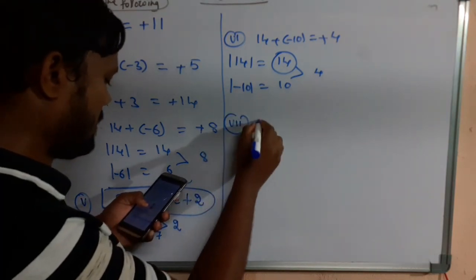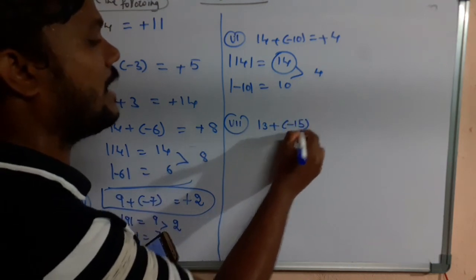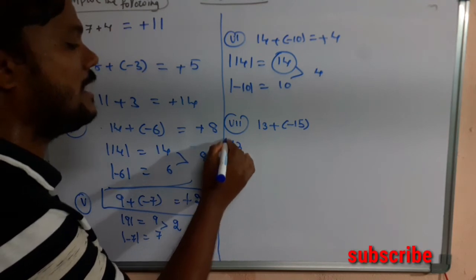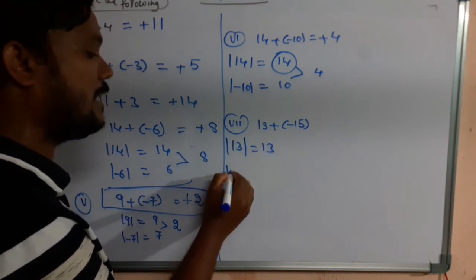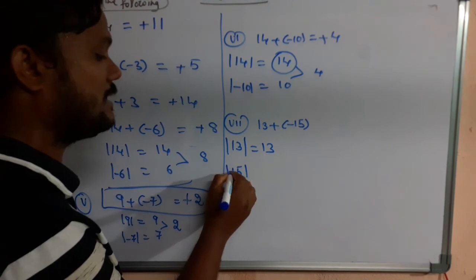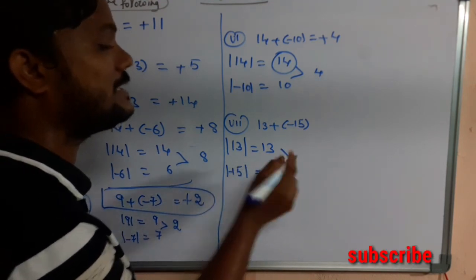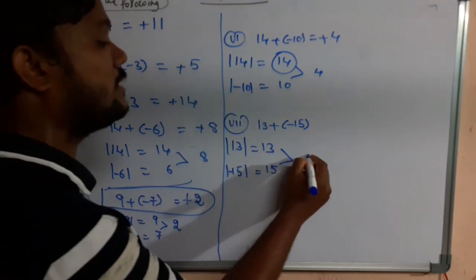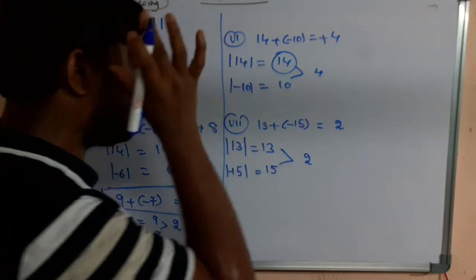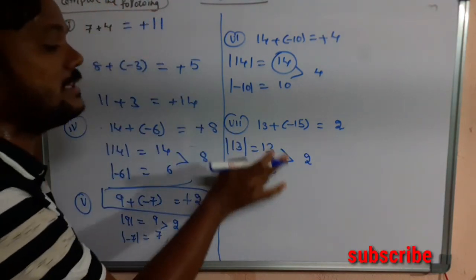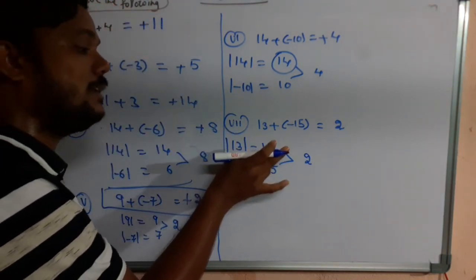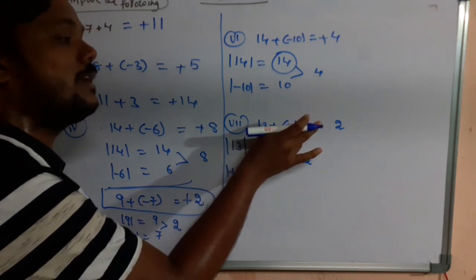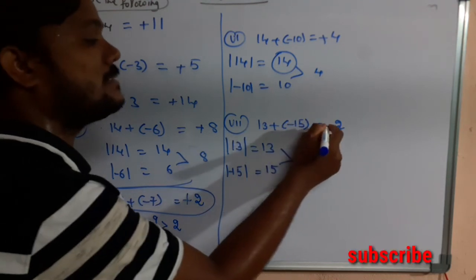The seventh question is 13 + (-15). Again unlike integers. Absolute value of 13 is 13, absolute value of -15 is 15. Take the difference: 15 - 13 = 2. Now, 15 has the greater absolute value, and in the question -15 has a negative sign, so the answer is also negative: -2.